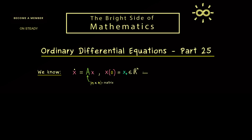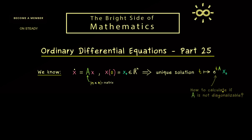We already know that a unique solution is given by the matrix exponential. More concretely, the time t is mapped to the matrix exponential e to the power tA, and this matrix is multiplied by the vector x₀ from the right-hand side. So the only thing we have to do is calculate this matrix exponential. And we have already learned that if matrix A is diagonalizable, then the matrix exponential is quite easy to calculate. Therefore, the general question is how to calculate it if A is not diagonalizable.